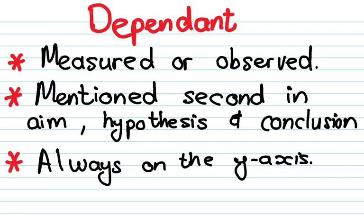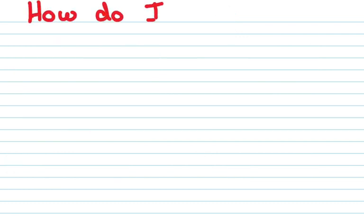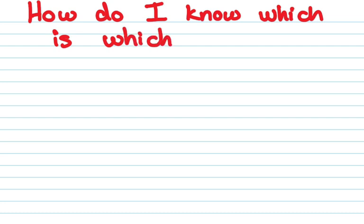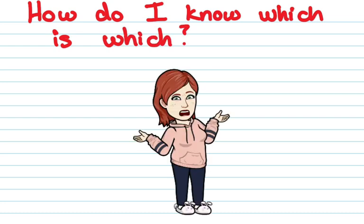This means that the independent variable is the cause and the dependent variable is the effect. Remember, in the exam we're not going to ask you for the definition — we're going to ask you to identify them. So how do you know which one is which?